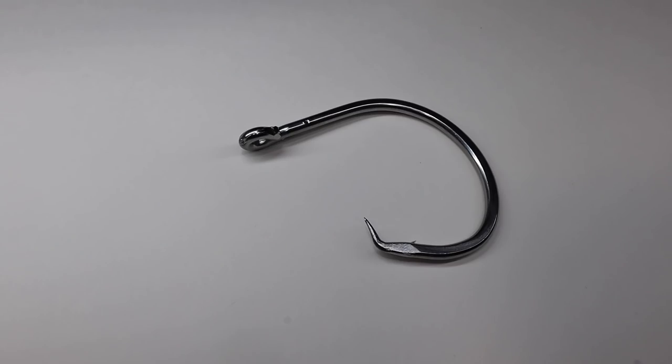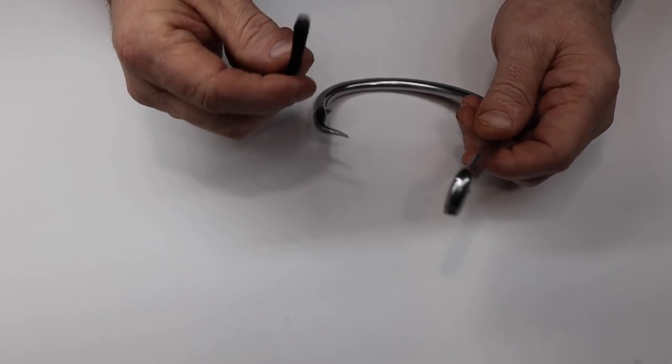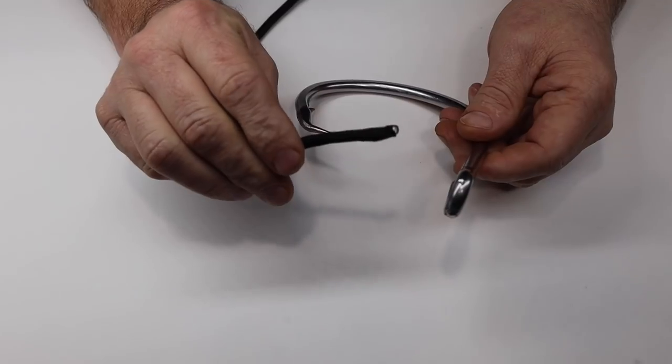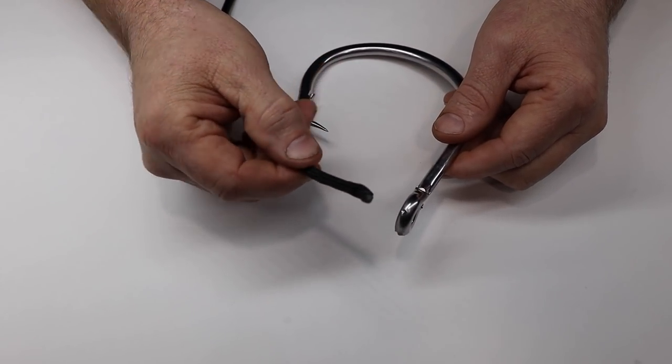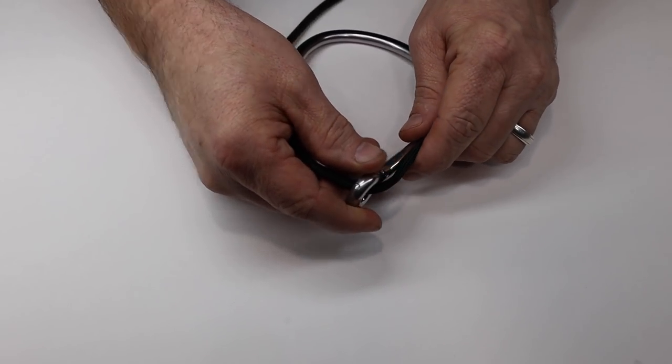Fishing knot number one, the knotless knot. On this first knot, I'm using a piece of paracord instead of fishing line so you can see it easier. And I'm using a shark hook, otherwise known as a man-sized hook. Now you take your leader line, aka my paracord, and you run it through the eye of your hook.